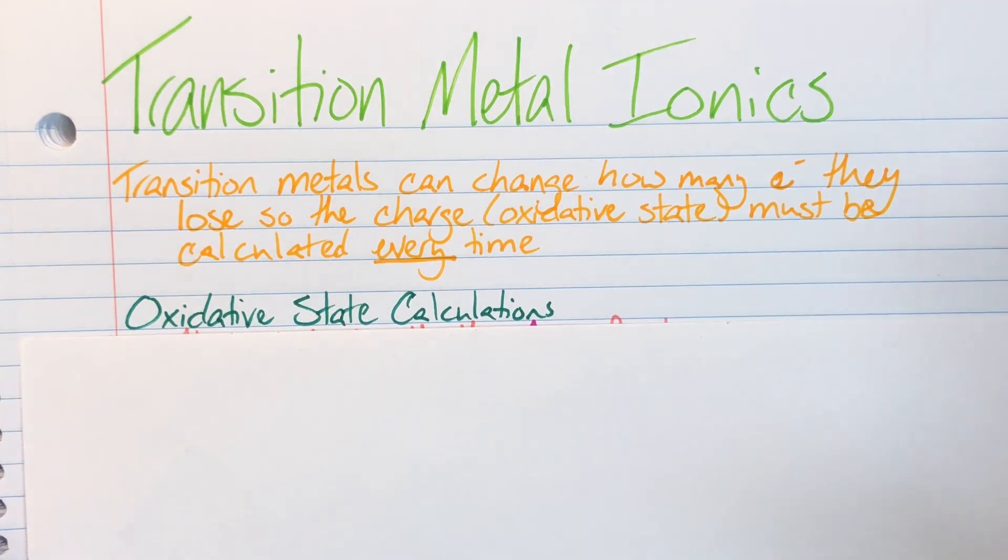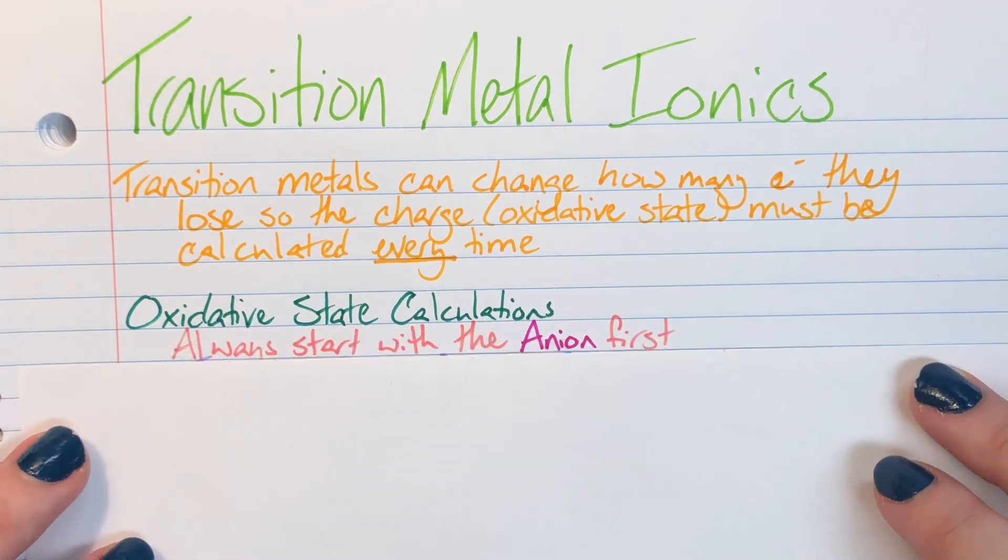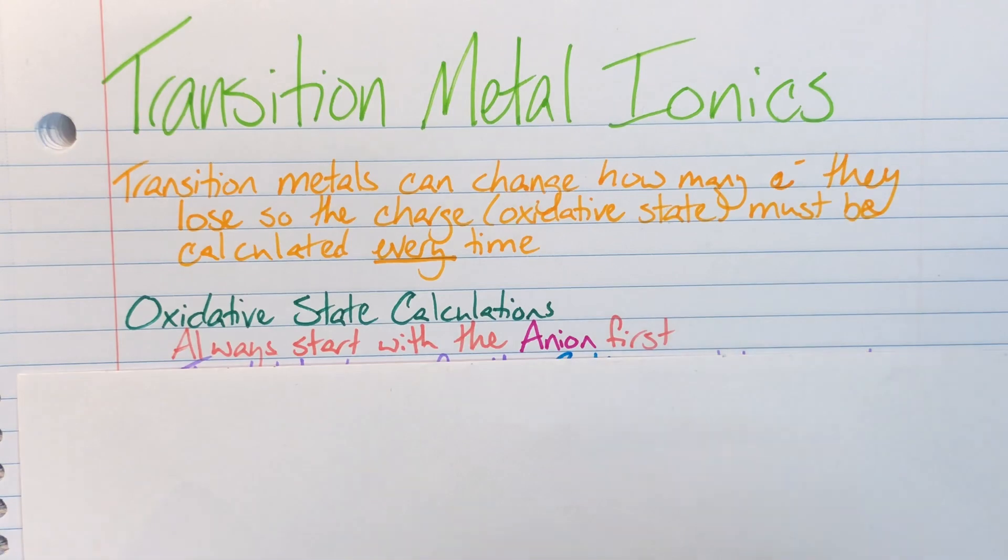For oxidative state calculations, I'm always going to start with my anion first. Oddly enough, my anion, my bad guy, the one who has a negative charge, is going to be more trustworthy than my cation, my positive charge. This is because my cation is changing how many valence electrons it's giving away, but my anion is always going to steal the same amount.